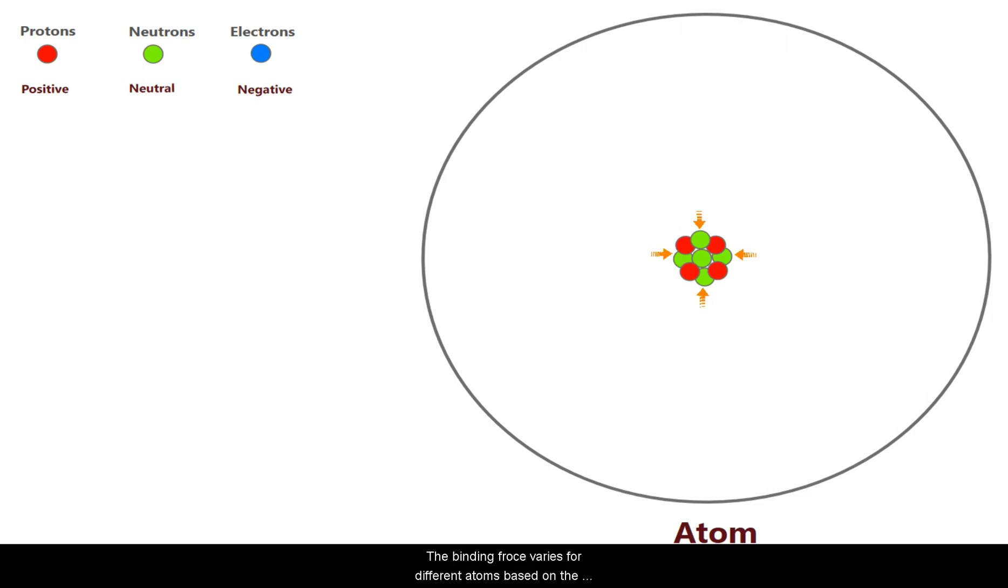The binding force varies from different atoms based on the size of the nucleus. If the force is more weaker then the nucleus will be more unstable.